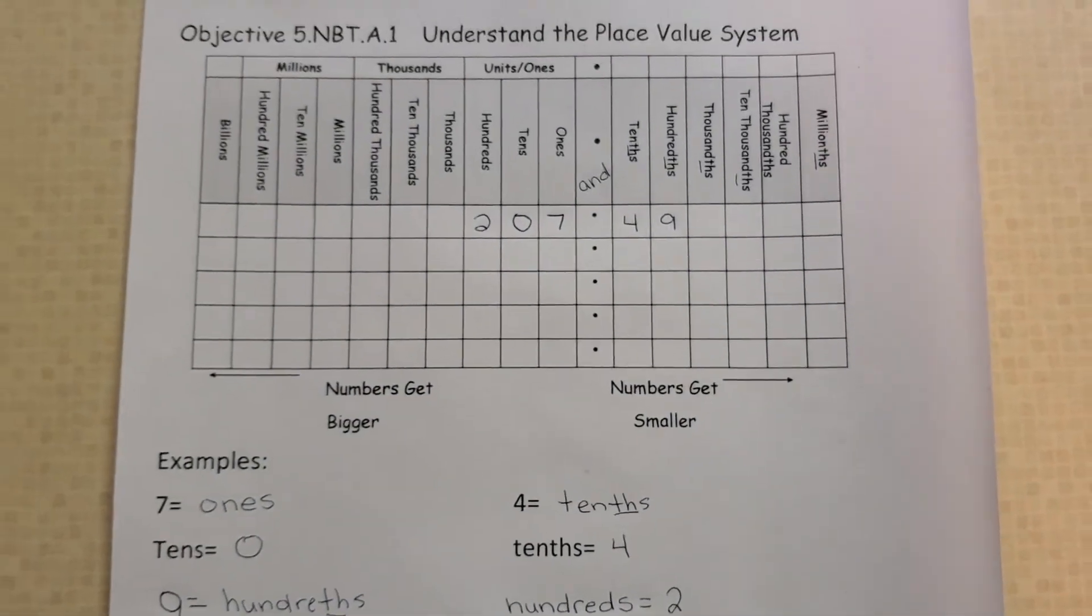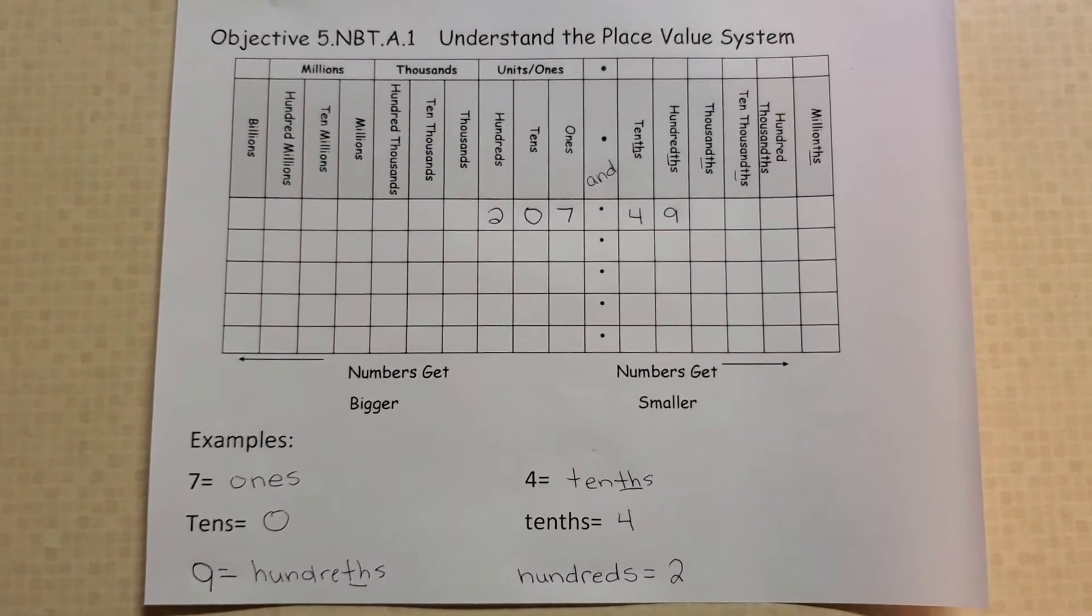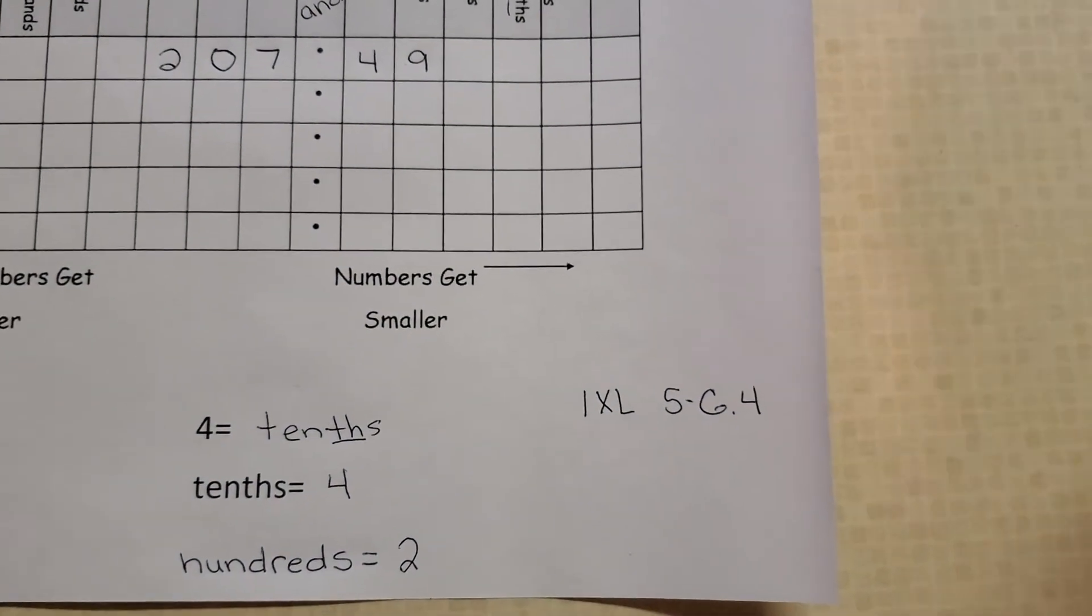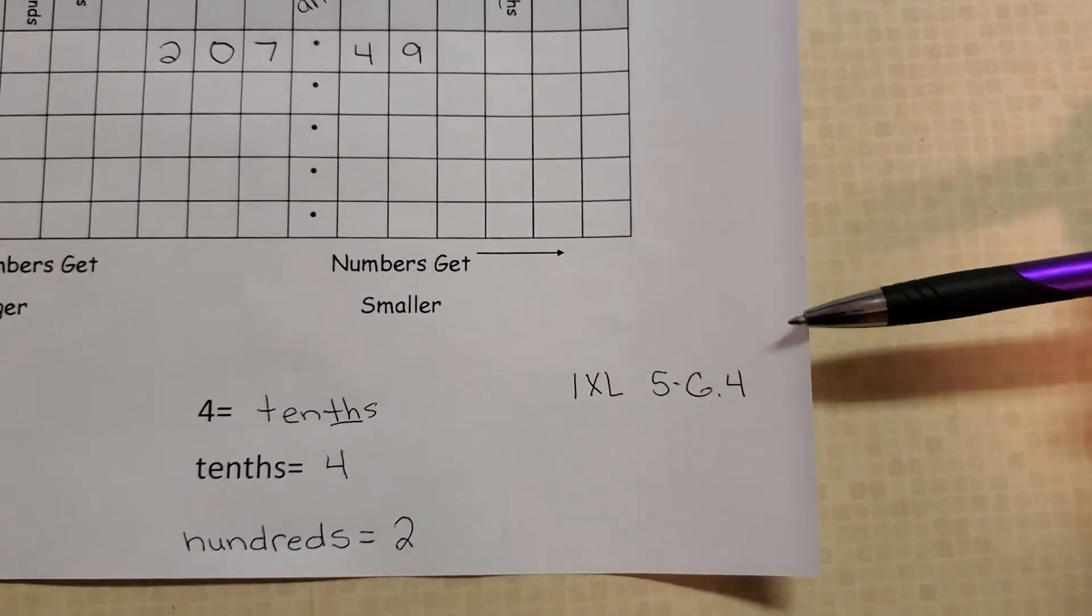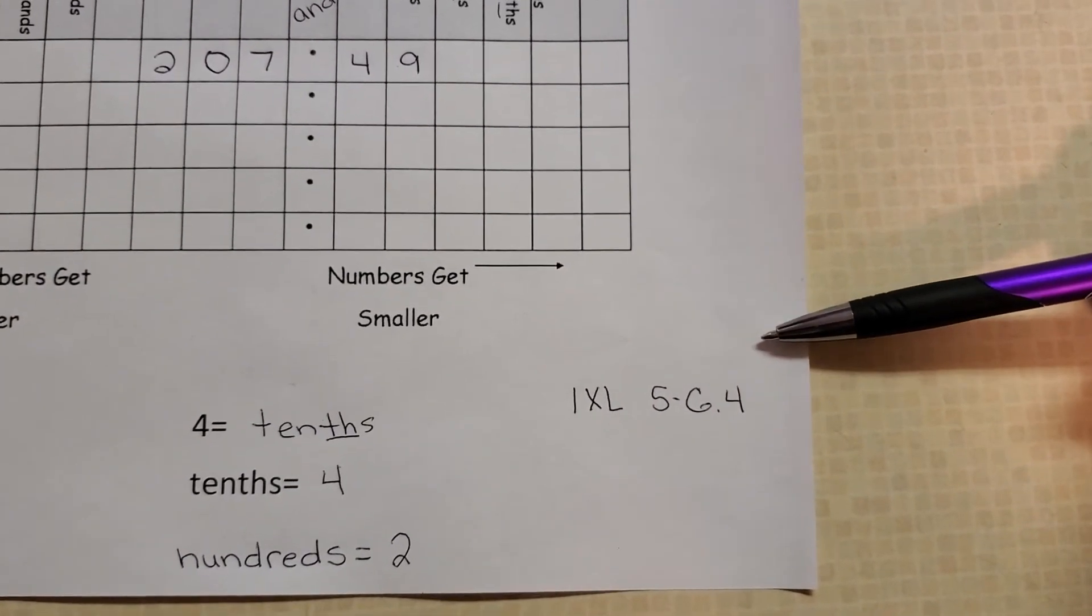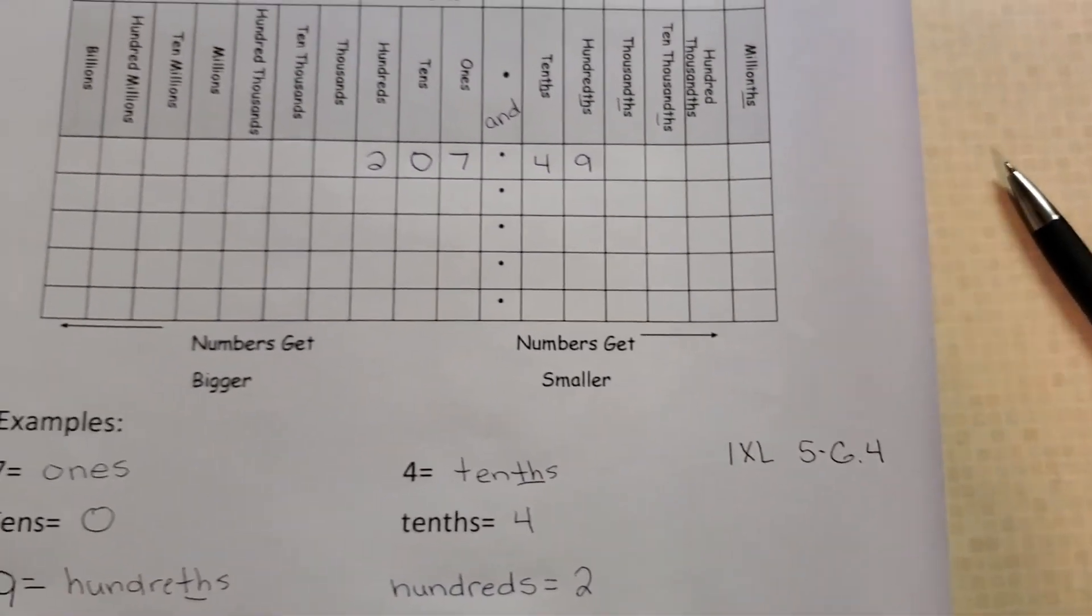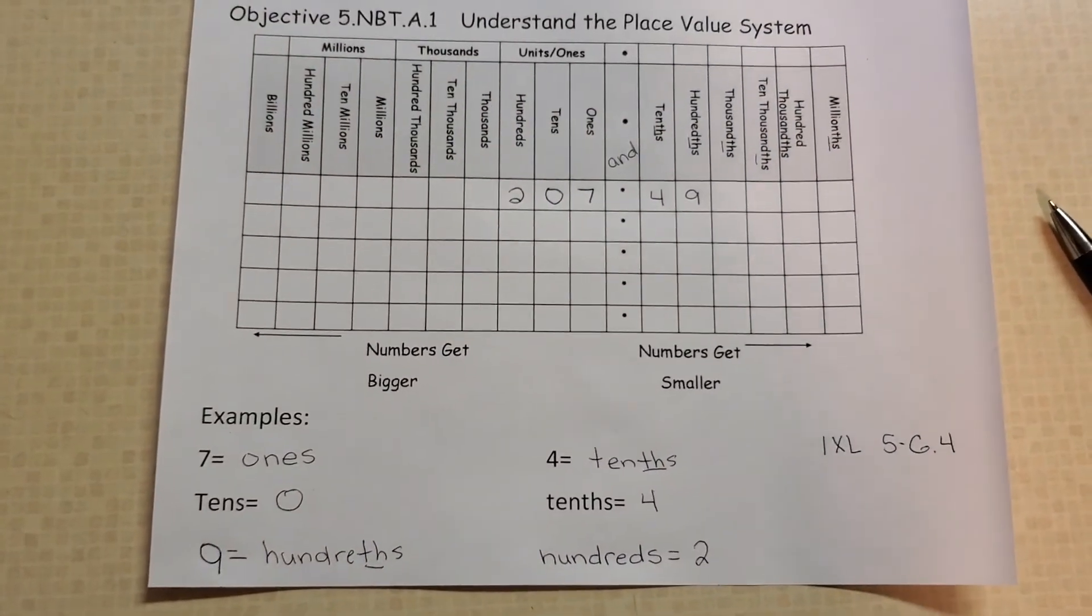So these are the types of examples you are going to have in IXL today. All right. So in IXL, you will be working on five, fifth grade, math, fifth grade, letter G, number four. If you have any questions, please give me a call. Goodbye.